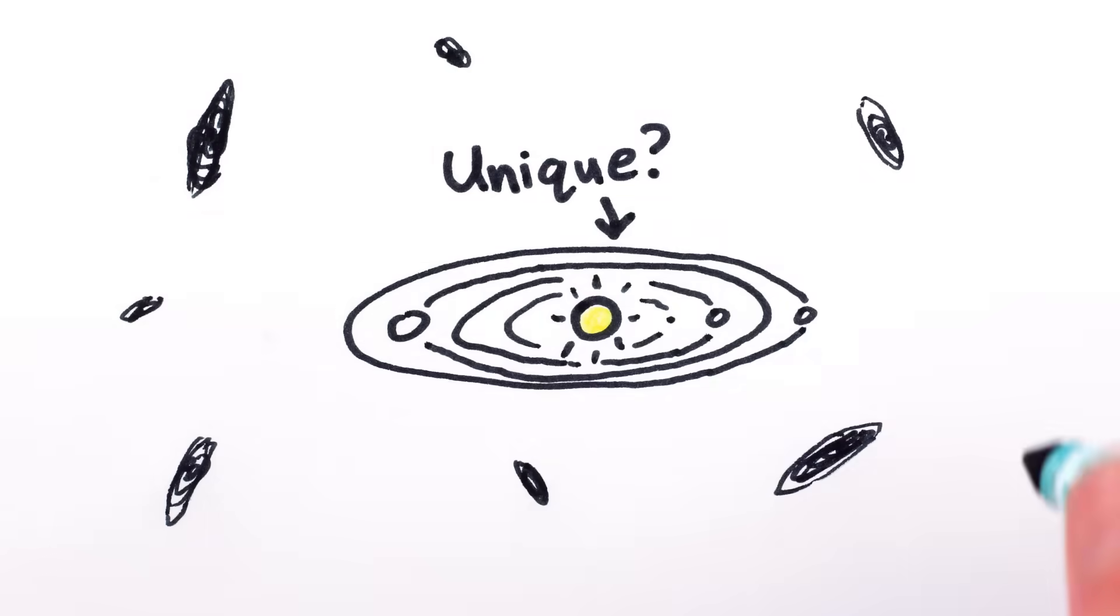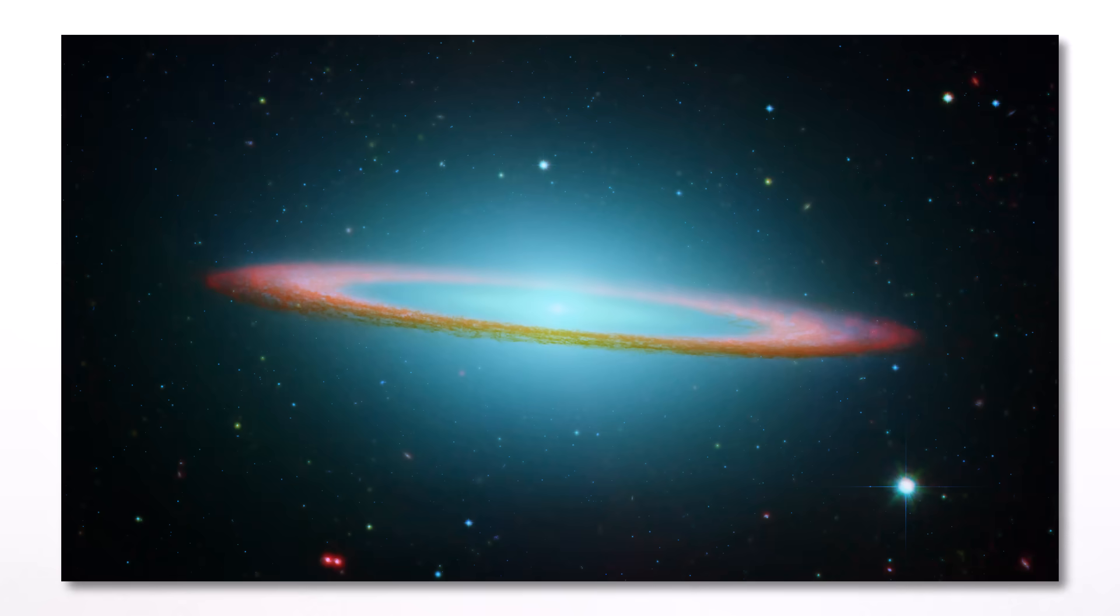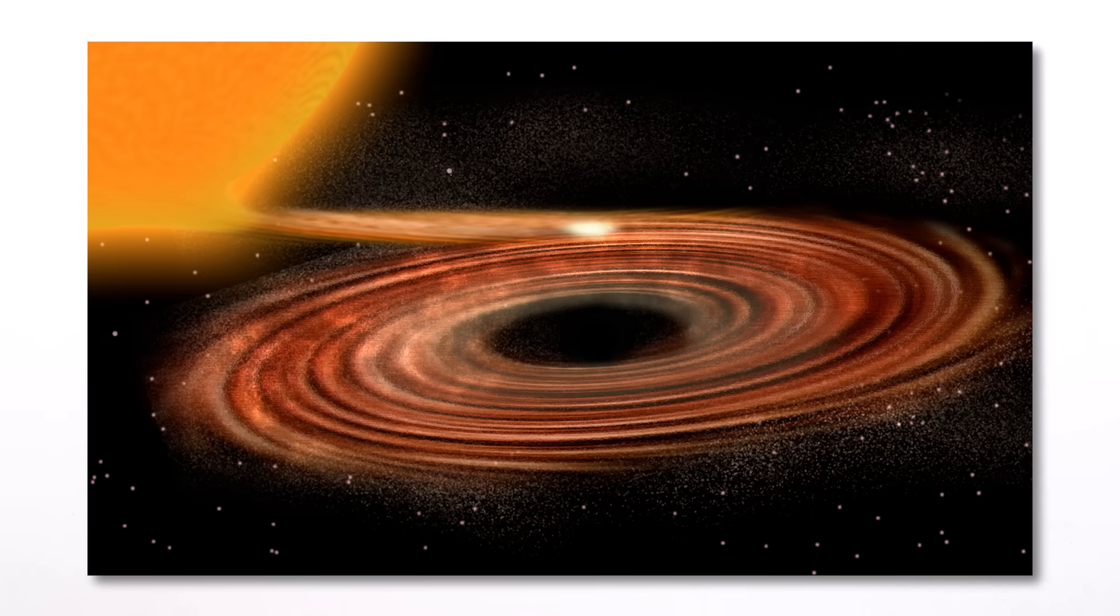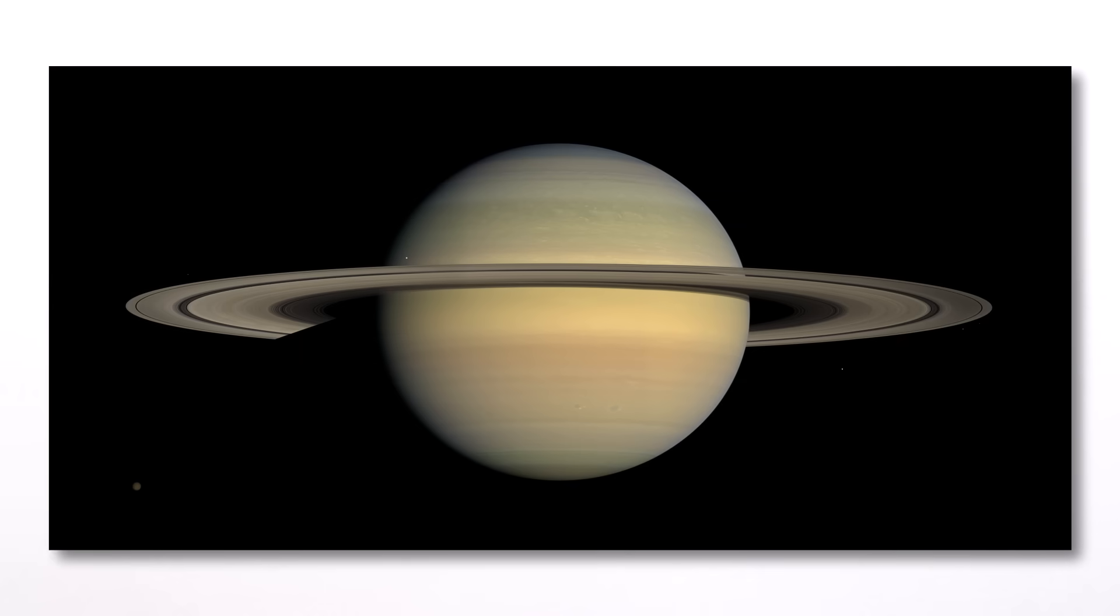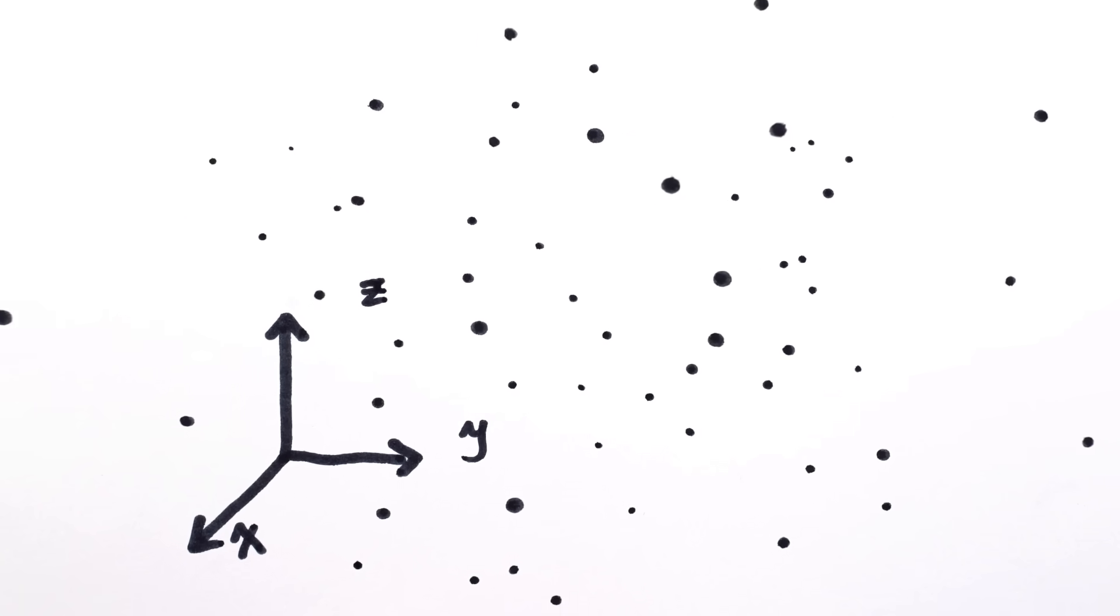Well, our solar system definitely isn't alone. Many exoplanet star systems are flat, a lot of galaxies are flat, black hole accretion discs are flat, Saturn's rings are flat, etc. So why, when there's all of 3D space to fill, does the universe have this preference for flatness?